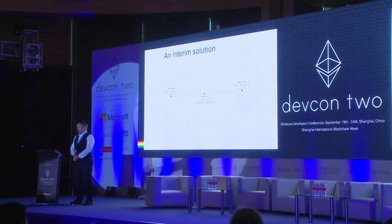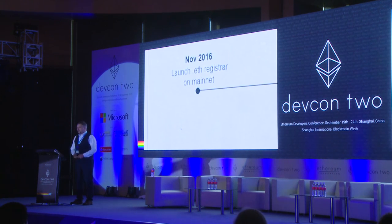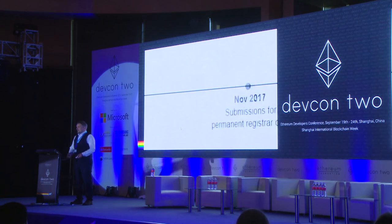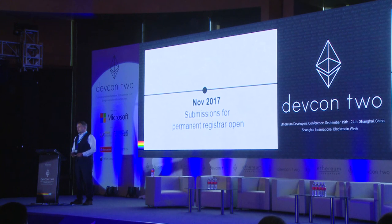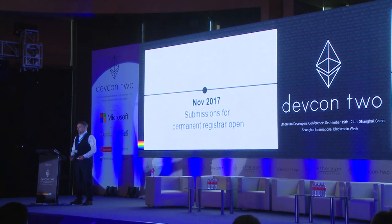We have come up with what Alex calls the McDonald's solution. Our plan is to deploy an interim registrar which uses a very simple registration scheme, and people can then register names. We plan on launching this towards the end of the year. About a year from now we'll start accepting submissions for a permanent registrar, which we expect will be more sophisticated and will take care of things like abuse. The reason for the delay is that we want to get some experience operating the name system and learn what the real practical problems are.